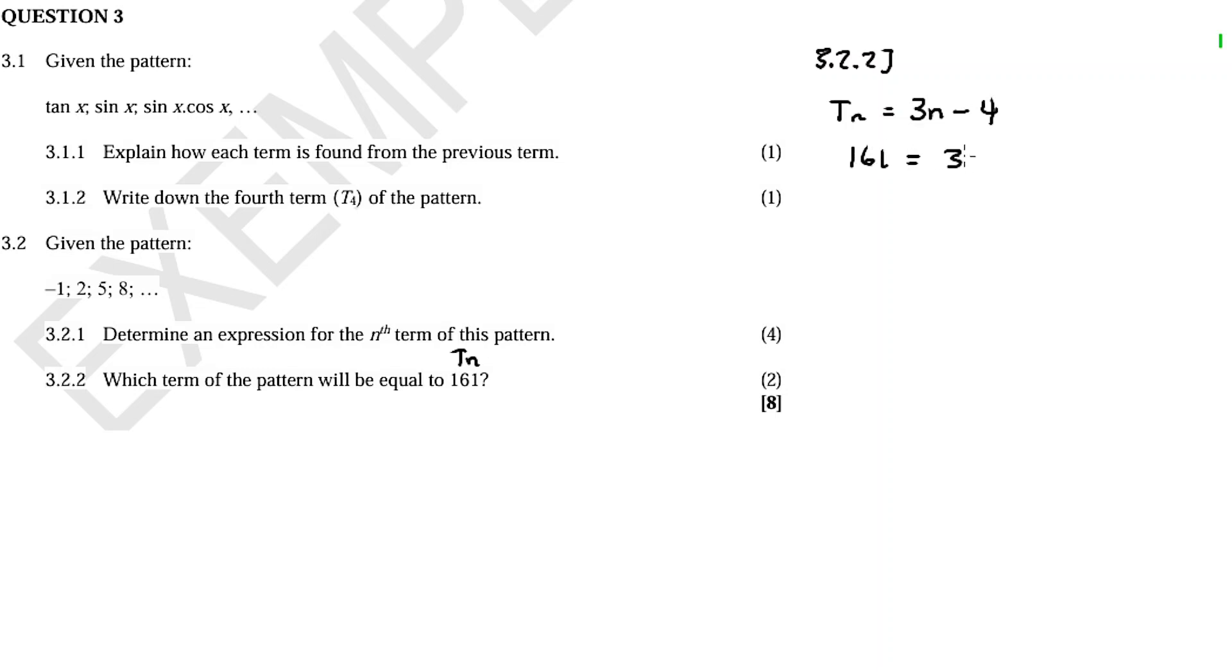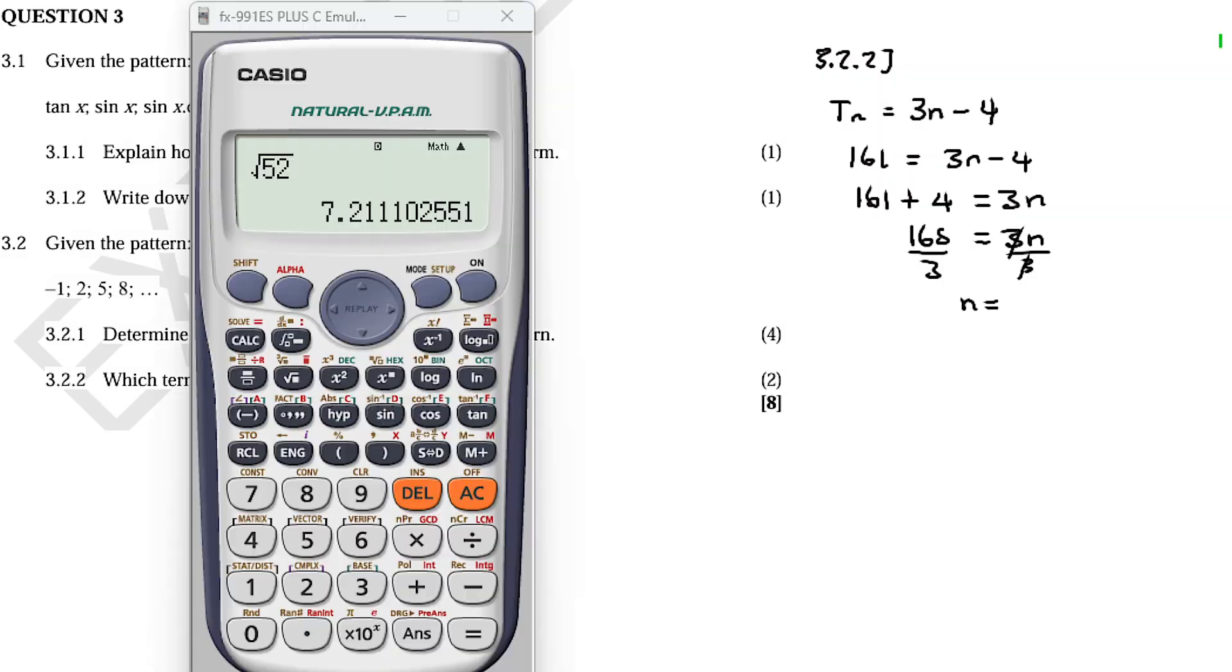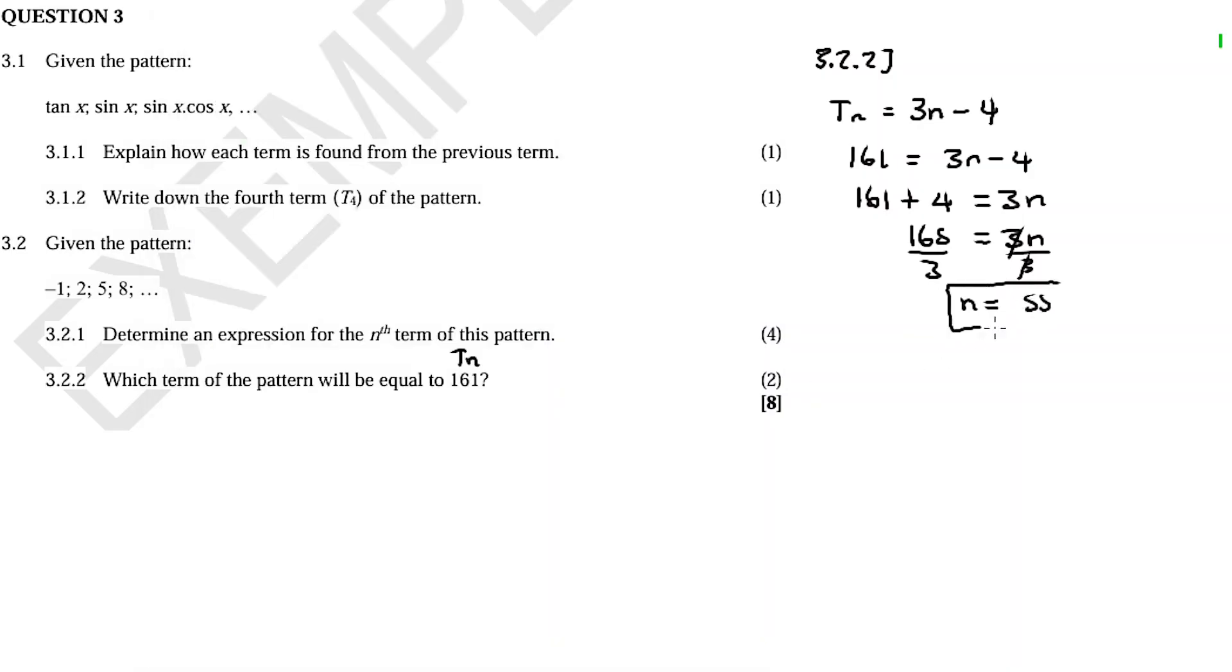161 equals 3n minus 4. Move 4 to this side: 161 plus 4 equals 3n, so 165 equals 3n. Divide by 3 on both sides, and n equals 55. This means that 161 is a term in the number pattern - it's term number 55.